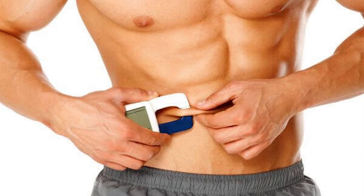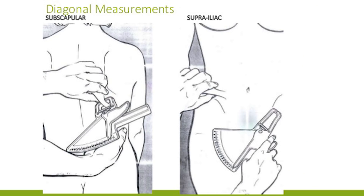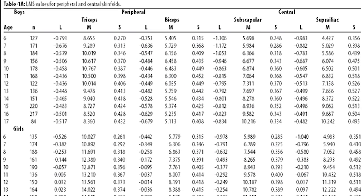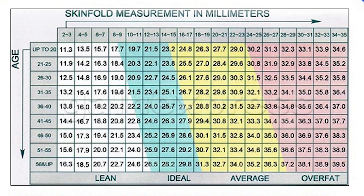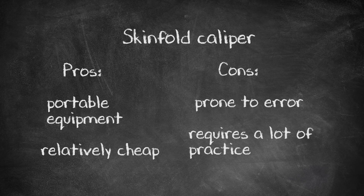The third method is skinfold calipers. This takes measurements of skinfold at different sites of your body and estimates your body fat percentage using specific formulas. It was one of the methods preferred in most gyms, now being replaced by bioelectrical impedance machines. It is much less expensive and takes no space compared to the two previous methods. However, it relies heavily on the ability of the person who measures and takes a lot of practice, so it's not uncommon for different people measuring to give very different results.